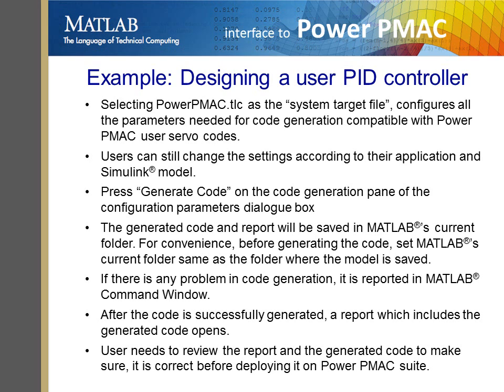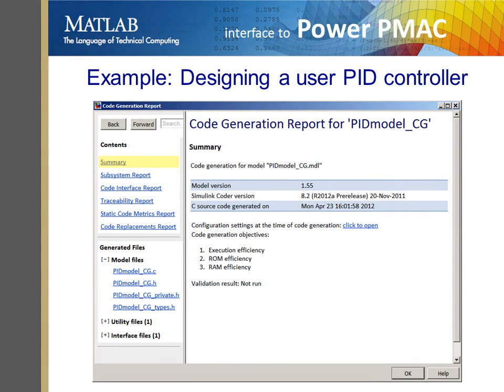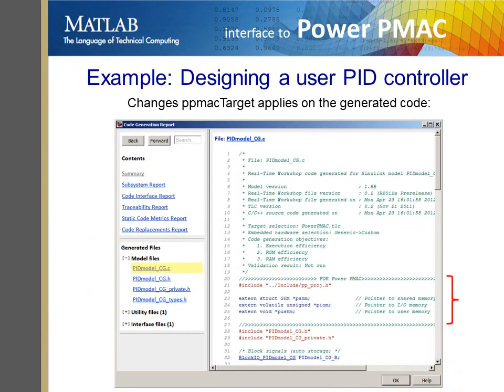Here are a few design tips to be used during this process. When the code generation process has completed without errors, a report document which includes the settings and generated code will open. This report can be studied by the user for any issues or undesired pieces of code. Browsing through the generated code shows some lines that are automatically added to the C code, specifically to make the code deployable to PowerPMAC.